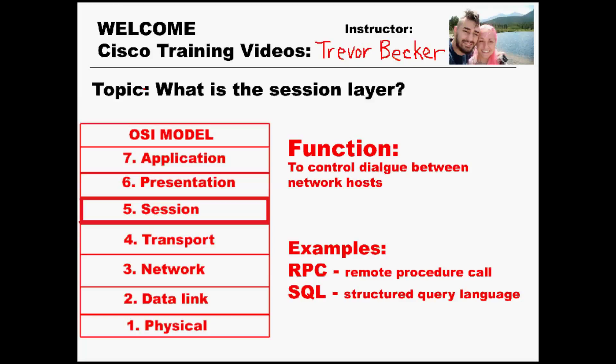Welcome to my CCNA training series, my name is Trevor. This video is going to go in depth into the session layer. The session layer is the fifth layer of the OSI model. Its function is to control dialogue that occurs between network hosts. It defines how hosts initiate and terminate connections in a network conversation, and this conversation is called a session.